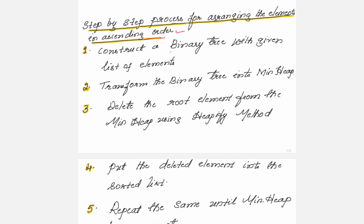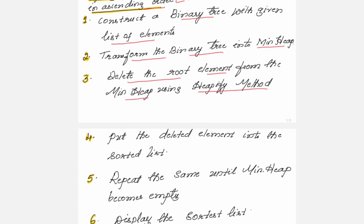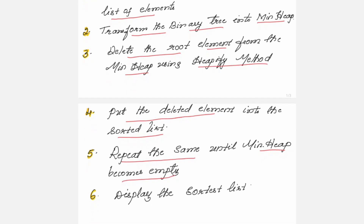Step 1: Construct a binary tree with the given list of elements. Step 2: Convert that binary tree into a min heap. Step 3: Delete the root element from the min heap using the heapify method and place it into the sorted list. Step 4: Repeat until the min heap becomes empty. Step 5: Display the sorted list.